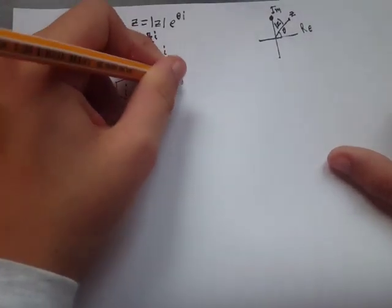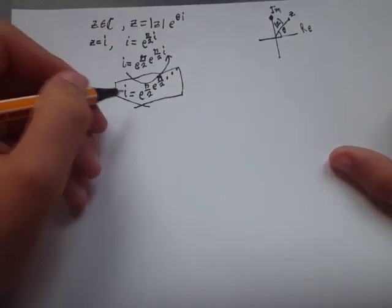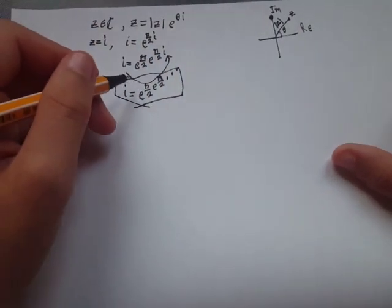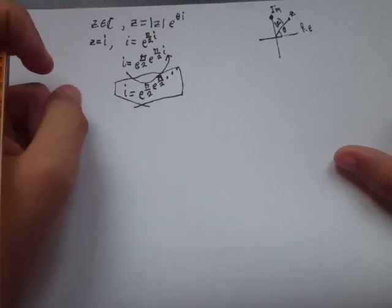So this is a bit weird because how can a power tower of real numbers give you the imaginary unit?